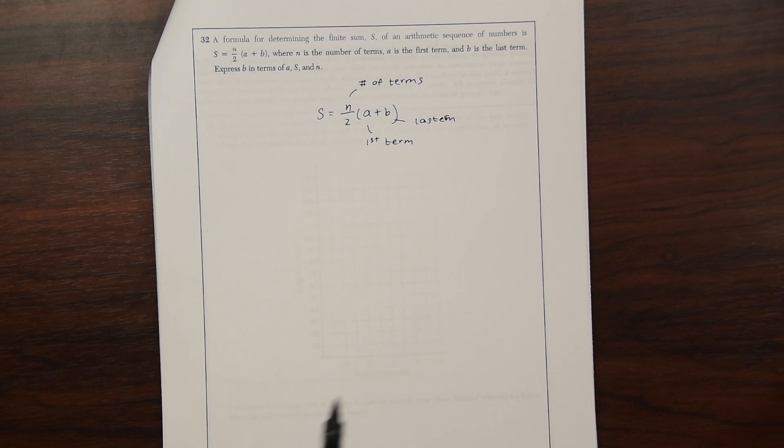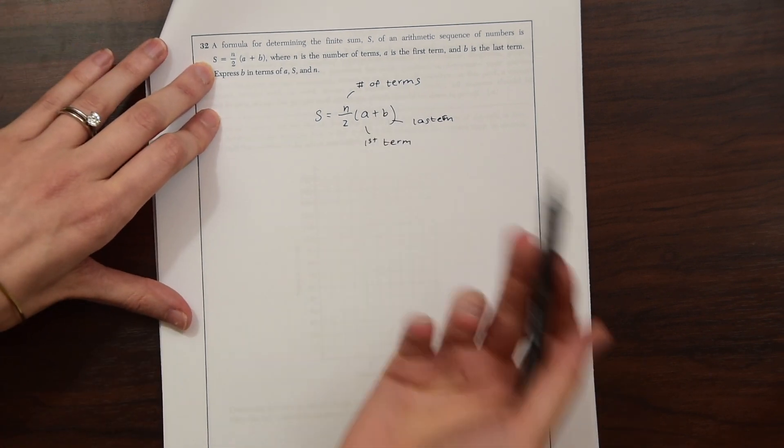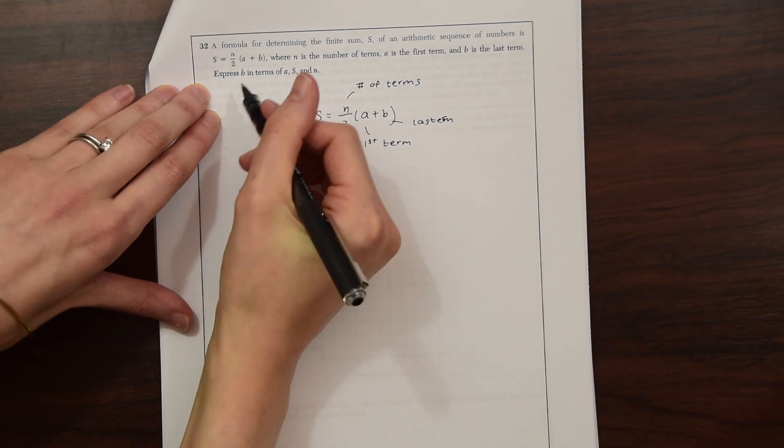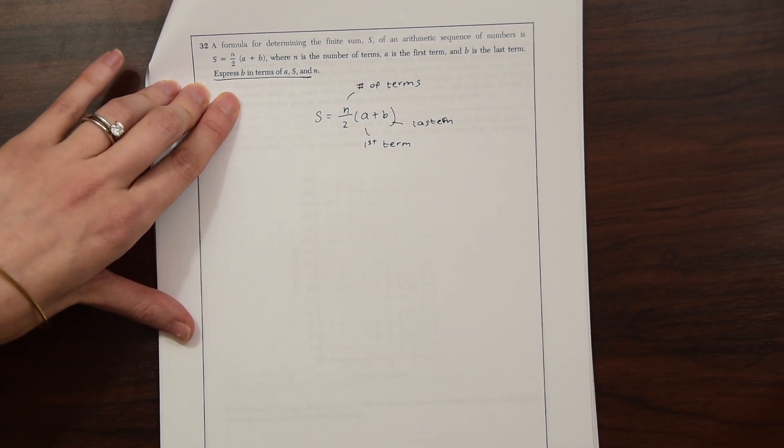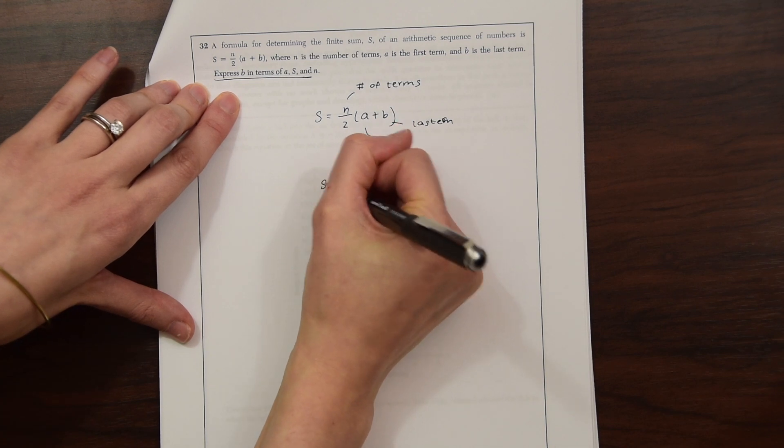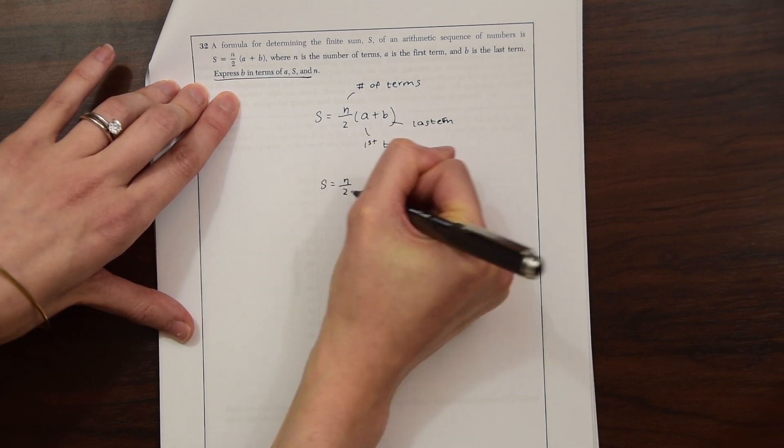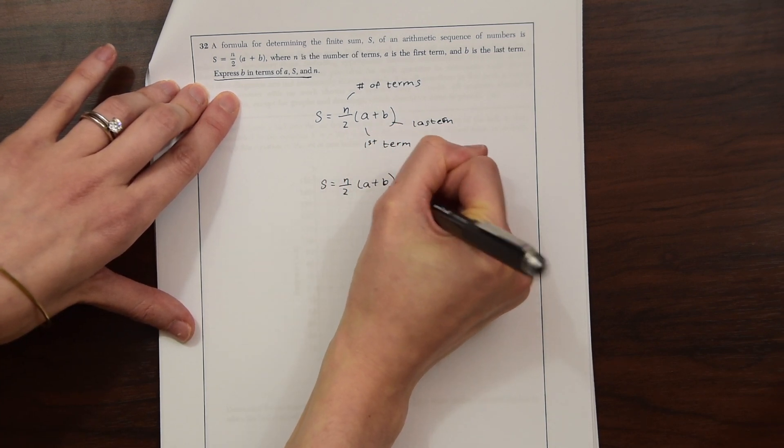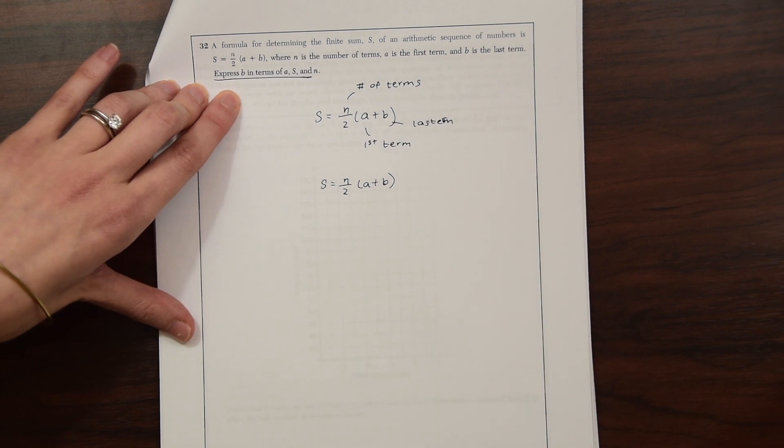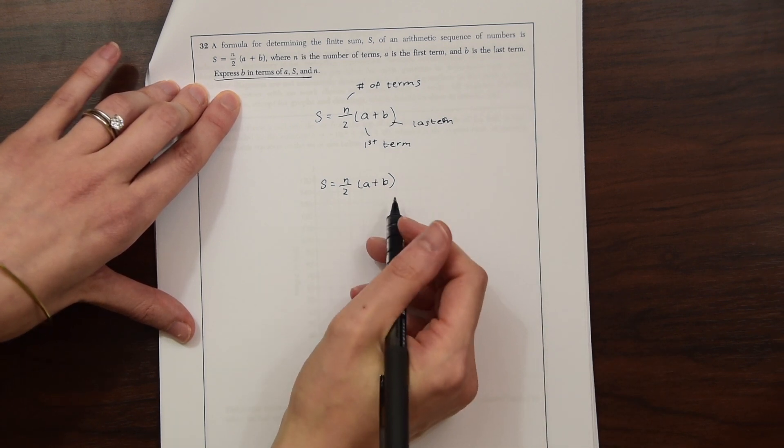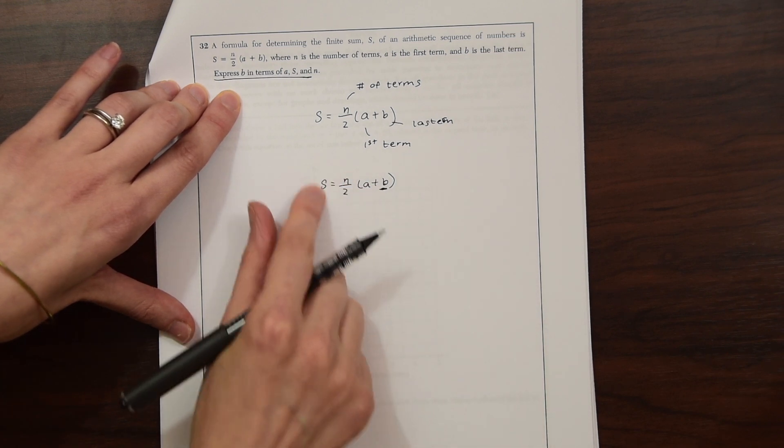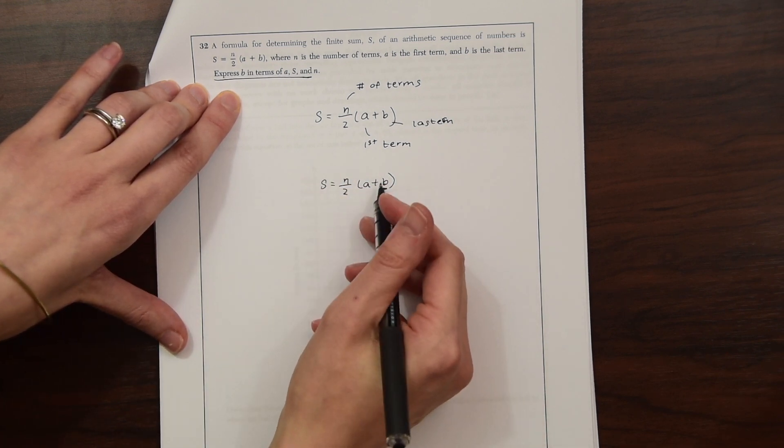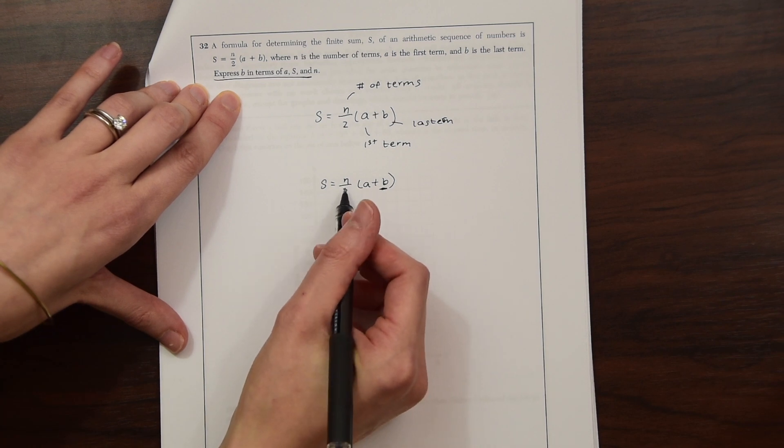So I just found what all of these terms represent, but we actually don't even need to do that. All we need to do here is express b in terms of a, s, and n. So these are called literal equations. And all we need to do here is just manipulate our equation using all the properties we know about algebra and solve for b in terms of all these other unknown variables.